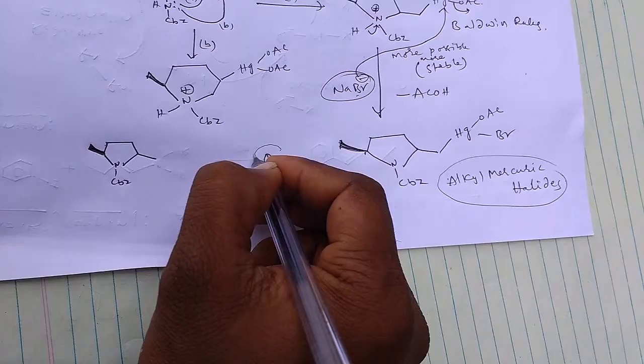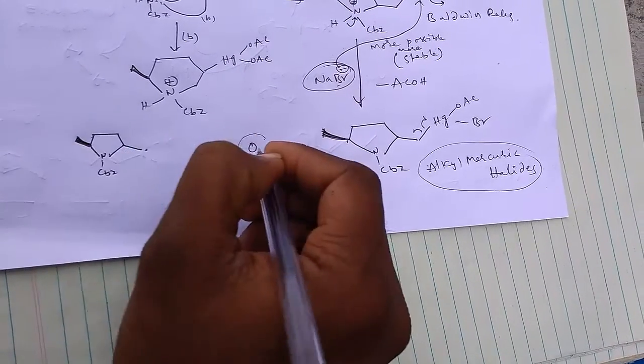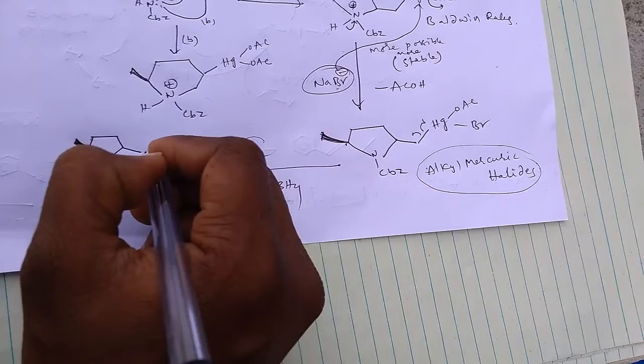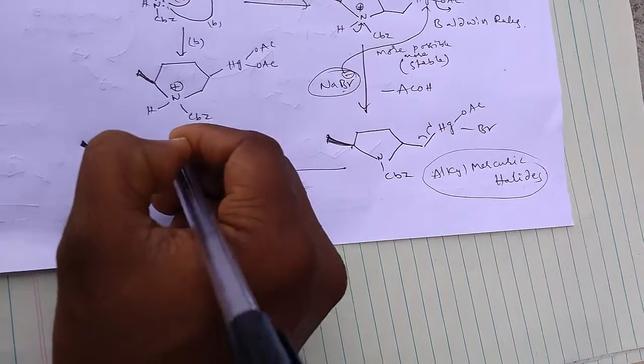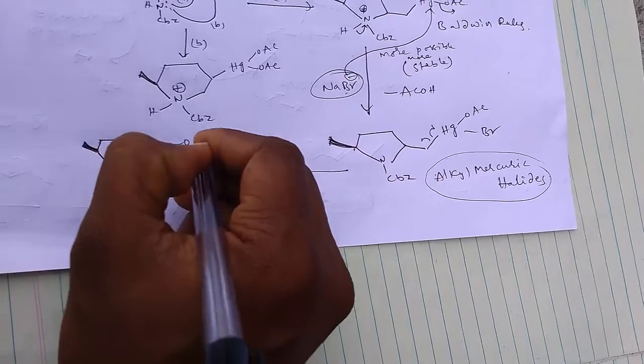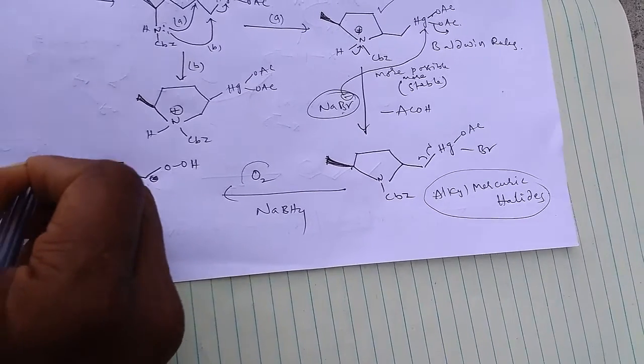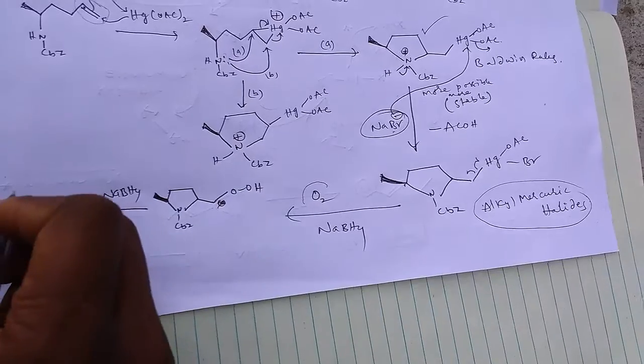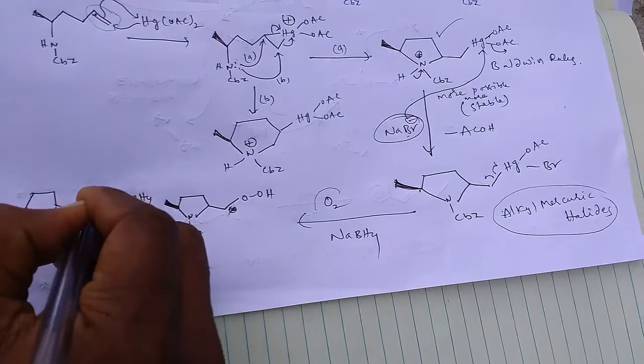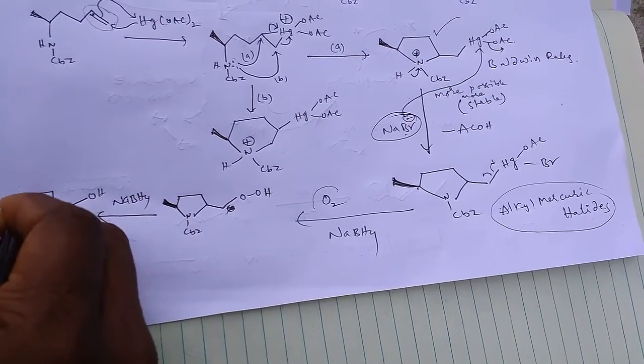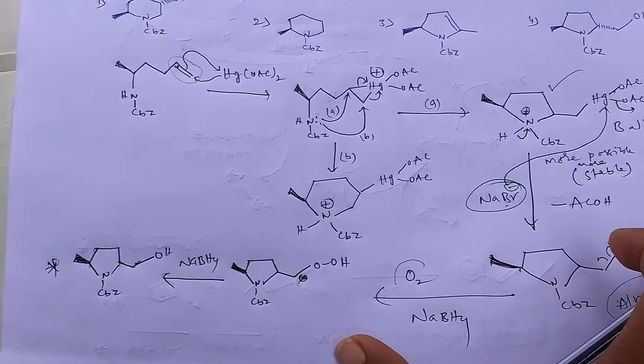And if you observe this generalized mechanism to the given problem here, okay, so here reduction takes place of radicals and this radical reacts with molecular oxygen. So here is the formation of OH. So I'm giving directly, and this on further sodium borohydride we can get CBz with OH. So this is the final product we can observe in the given problem.